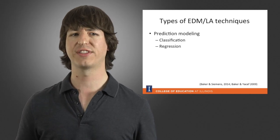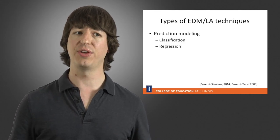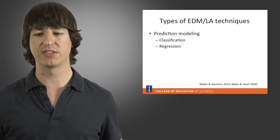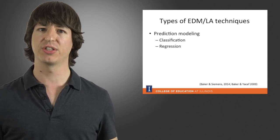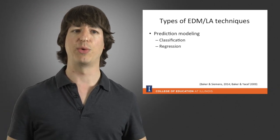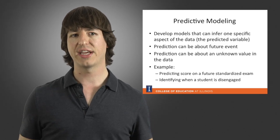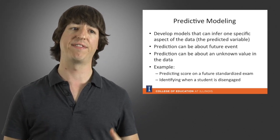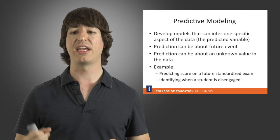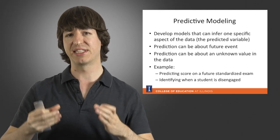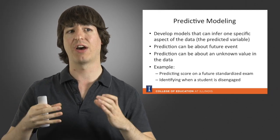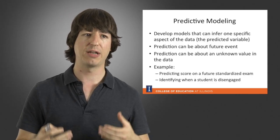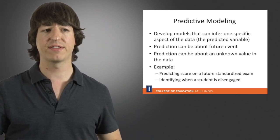One of the first types of techniques we can use is what we call predictive modeling, and more specifically two types: classification and regression. In the context of predictive modeling, we want to develop a model that can infer from one specific aspect of the data, which we call the predicted variable. This prediction can be done about future events or about something happening in the moment that the learning environment doesn't give us information about.